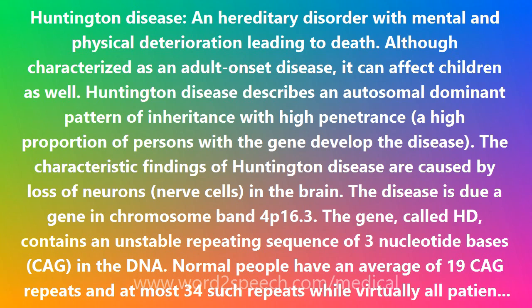The characteristic findings of Huntington disease are caused by loss of neurons and nerve cells in the brain. The disease is due to a gene in chromosome band 4p16.3. The gene, called HD, contains an unstable repeating sequence of three nucleotide bases CAG in the DNA.